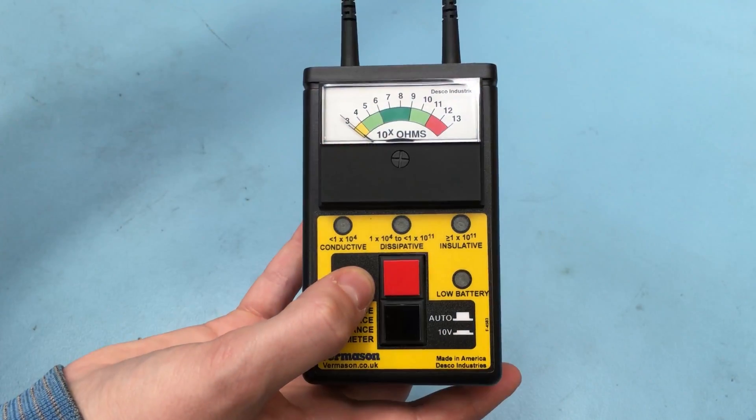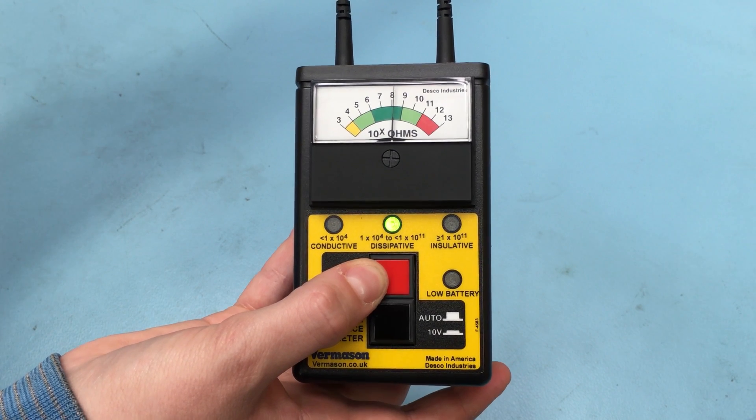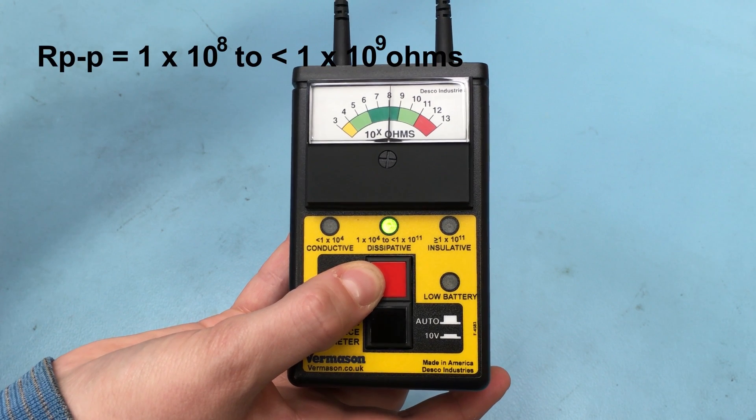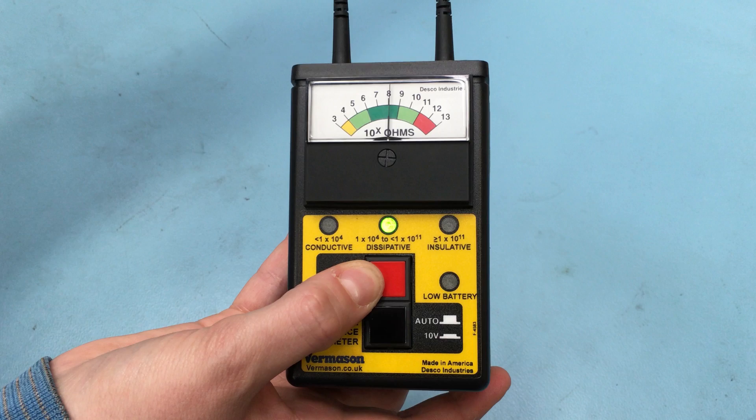In our example, the needle has stopped just above 8. The measurement for resistance point to point is therefore between 1 x 10 to the 8 ohms to less than 1 x 10 to the 9 ohms.